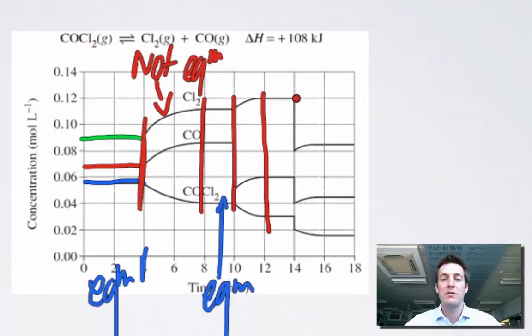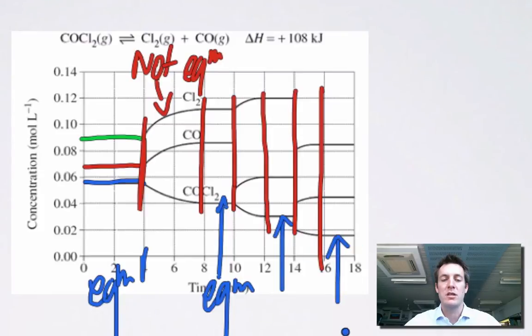And then again, after 14 seconds, a change is made. How do we know that we're not at equilibrium here? Because the concentrations are changing, and then they get back to constant amounts, or flat lines, and we're back at equilibrium. So we've got another two equilibrium sections there on that graph. So that's what the graphs look like.